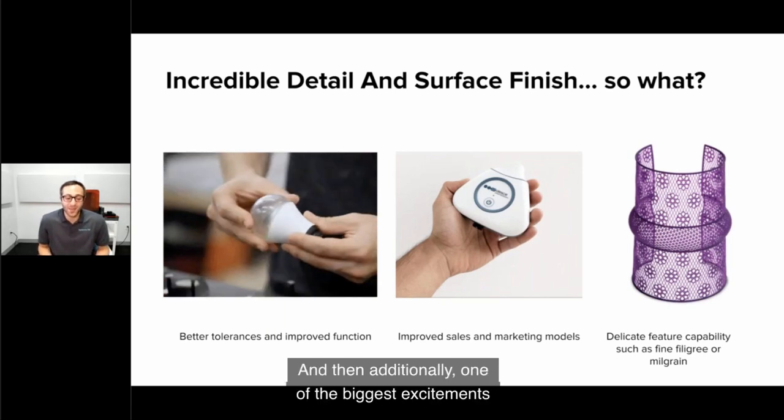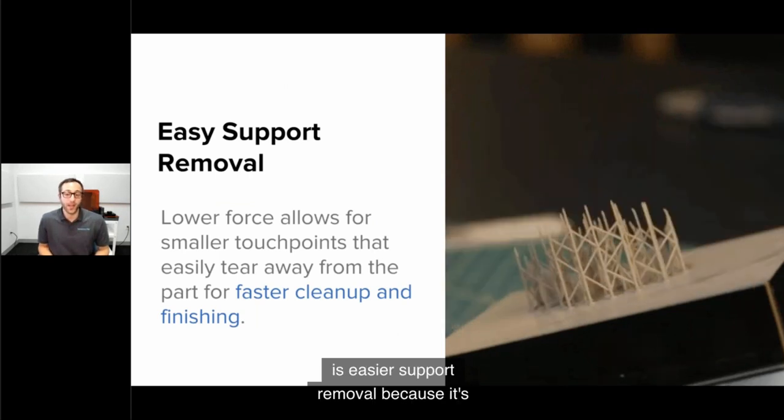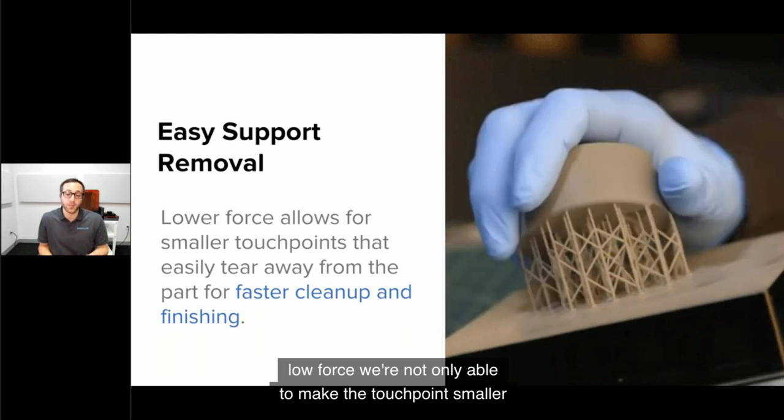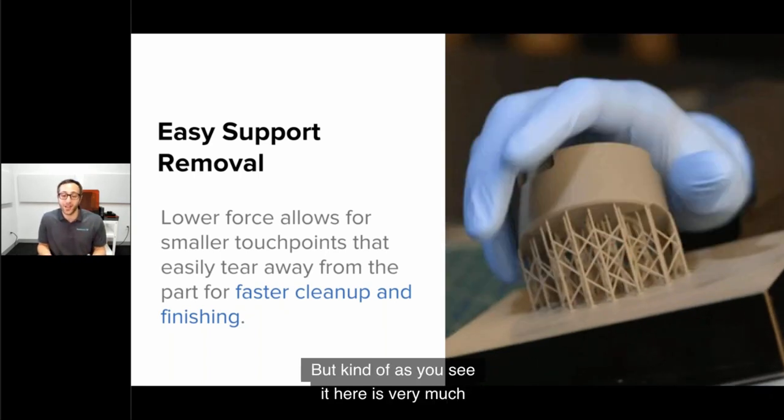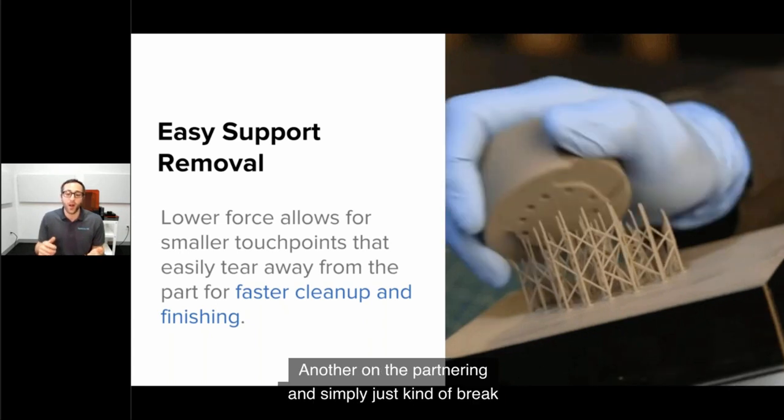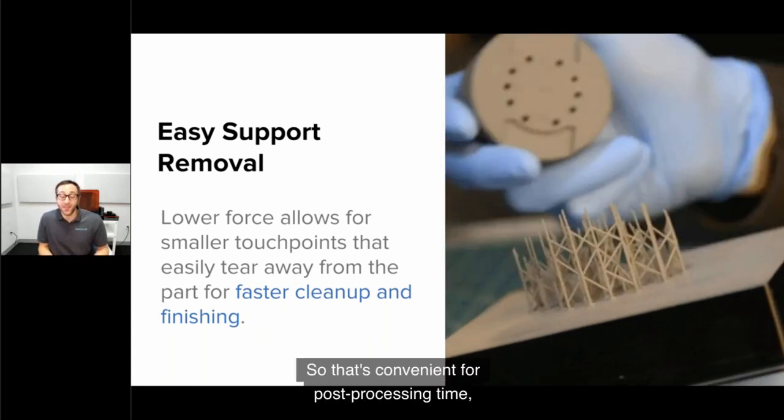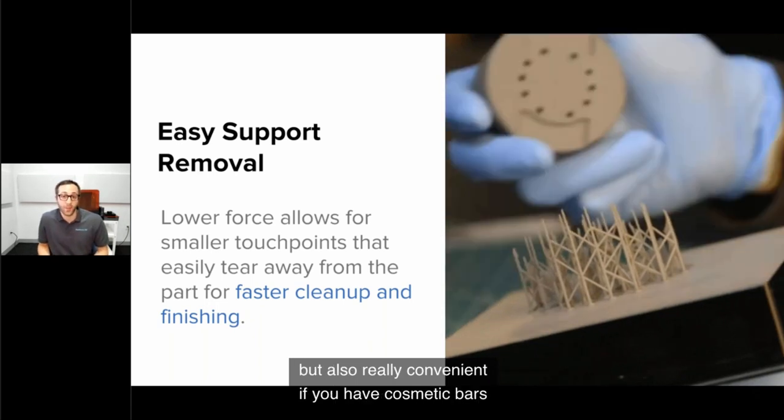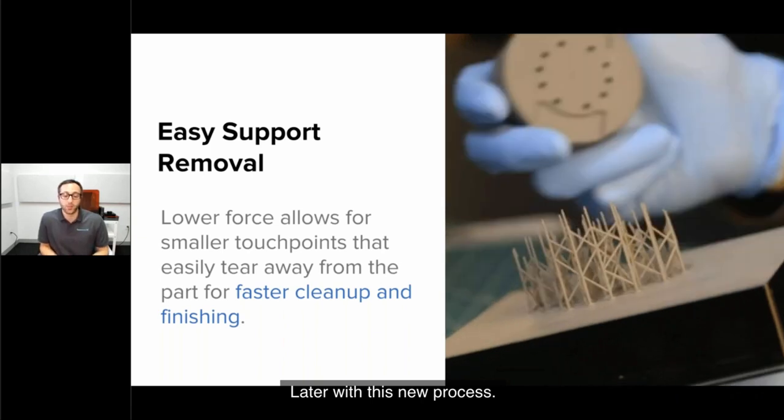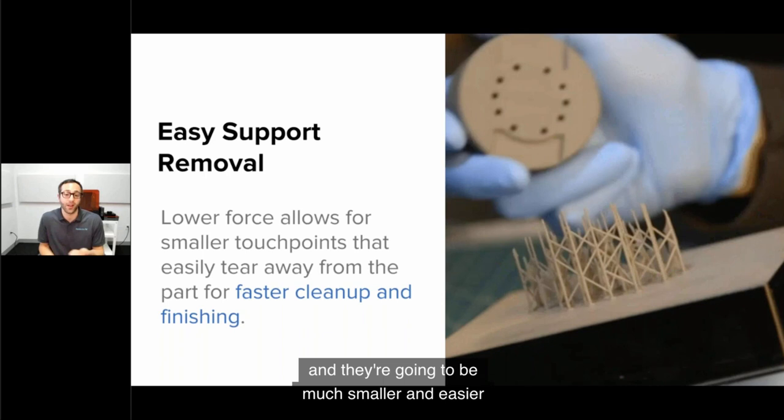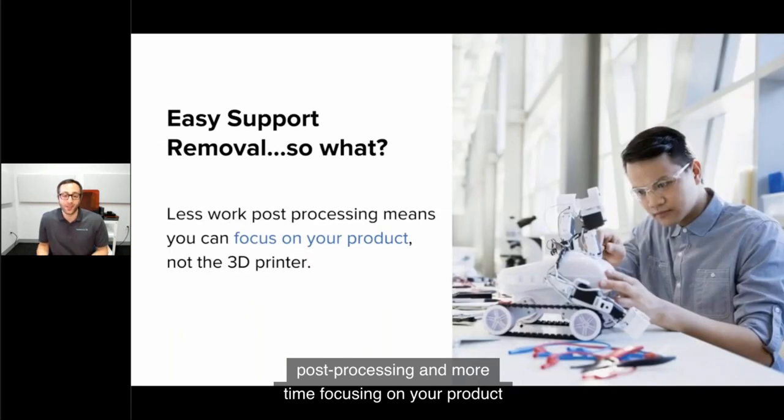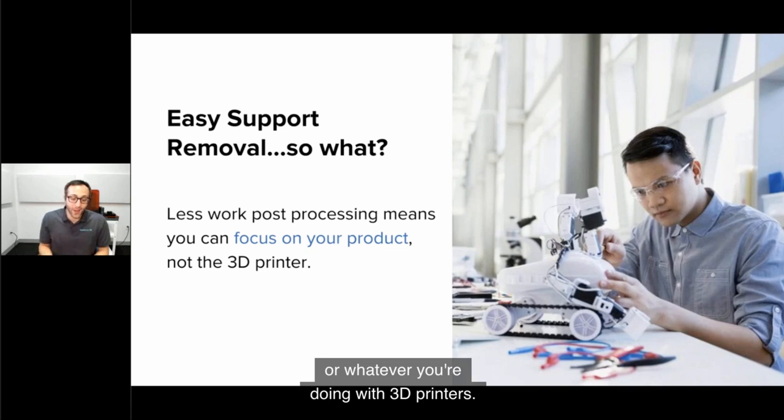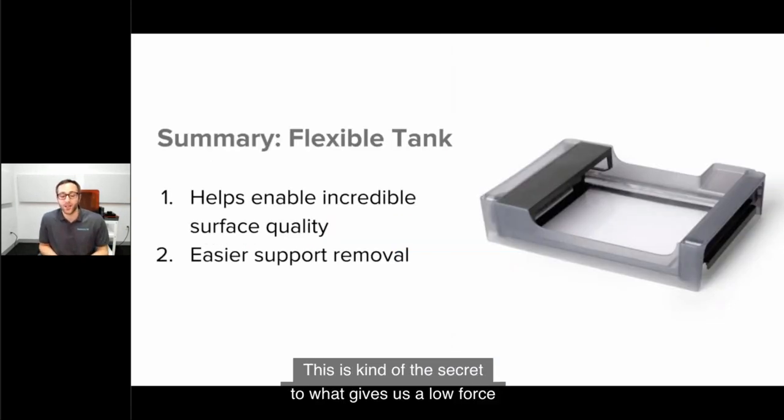What does that mean for you? If you're doing engineering or prototyping, any tolerances, clearance holes, or snap fits will be preserved with much greater accuracy. For sales, marketing, or cosmetic models, there are much fewer steps between the part coming off the printer and its final presentation state. One of the biggest excitements about the low force process is easier support removal. We're able to make the touch points smaller and use fewer of them. You can simply break the model away with one hand on the build platform and another on the part.